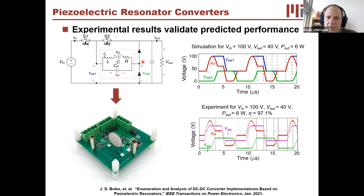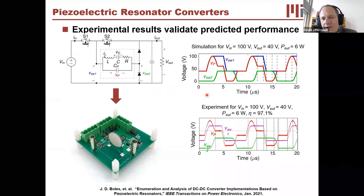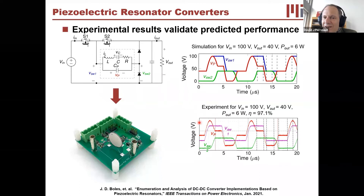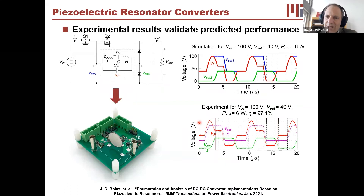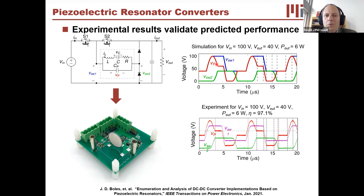Here's an experimental example: a converter using the minimum number of switches, with diodes replacing two of the switches, and no magnetics whatsoever — the only energy-transfer element is the piezoelectric resonator. The experimental waveforms match the models exactly, suggesting the modeling framework is correct, and efficiencies match very well too. The efficiency is about 97%, which is competitive with what you need.